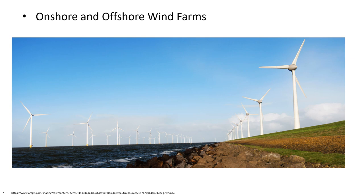We shall now discuss about wind farms. A wind farm is a group of wind turbines in the same location used for the production of electric power. A large wind farm may consist of several hundred individual wind turbines distributed over an expanded area, but the land between turbines may be used for agriculture and other purposes. For example, the Gansu wind farm, the largest in the world, has several thousand turbines. A wind farm may also be located offshore.